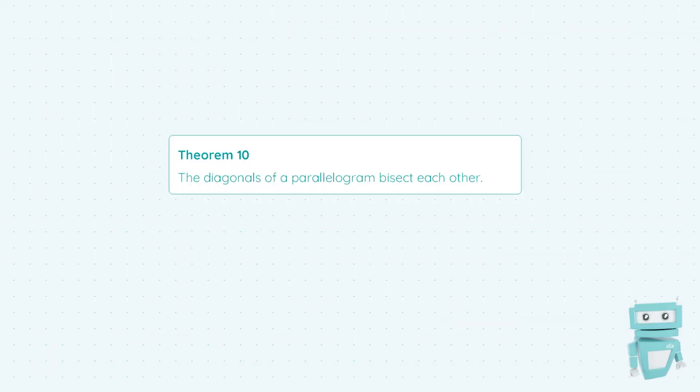Hi guys, Sean here from StudyClicks and in this video we're going to be taking a look at another theorem. This is theorem 10 which states that the diagonals of a parallelogram bisect each other.